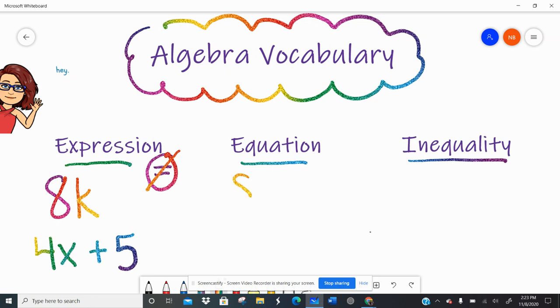An equation then has an equal sign. So if I have 8k equals 64, that is an equation. 4x plus 5 equals 10. That is an equation. So equations have equal signs.